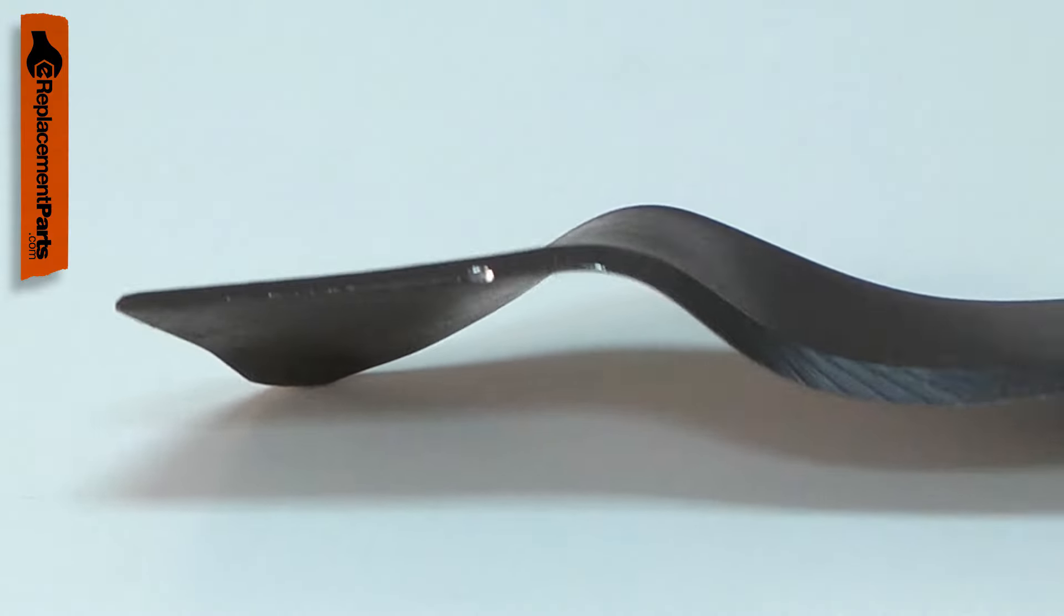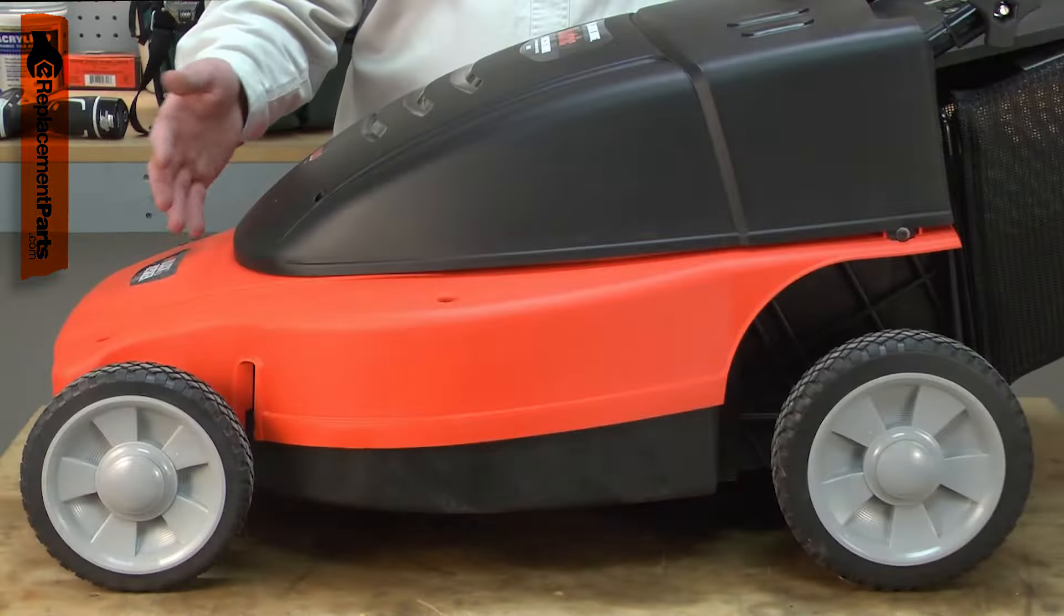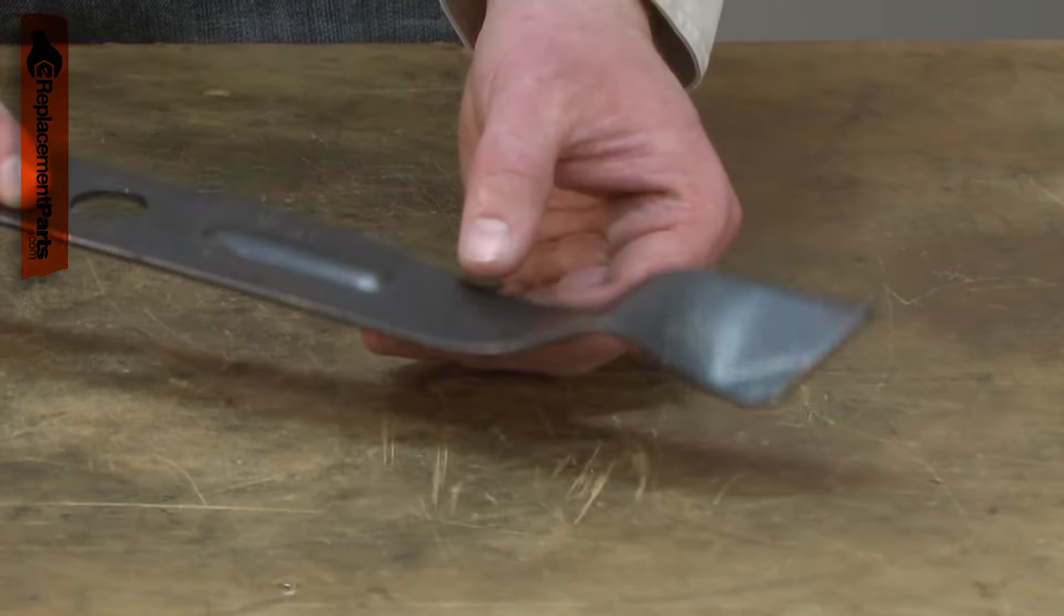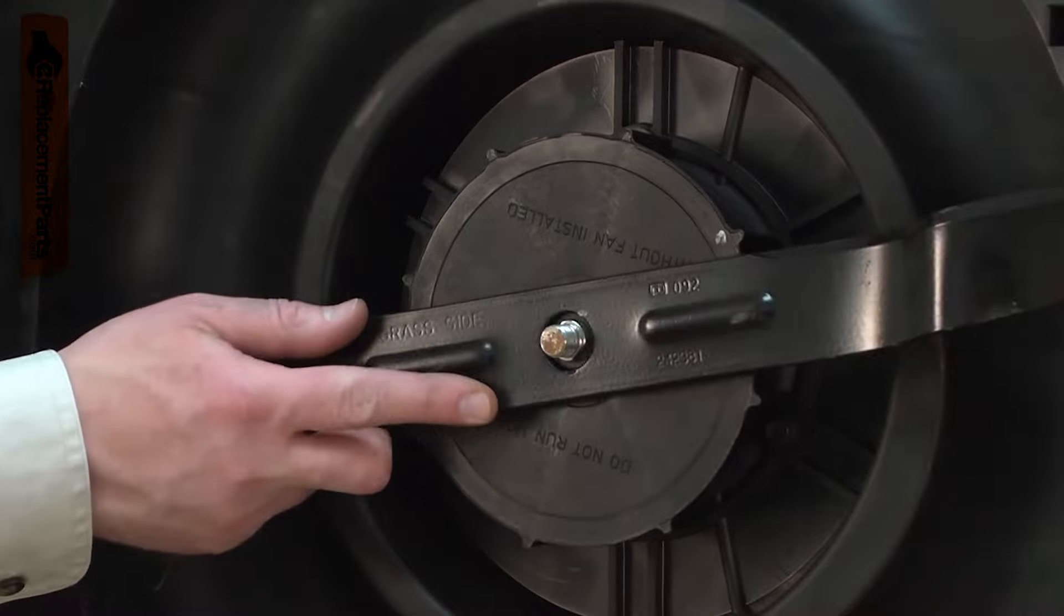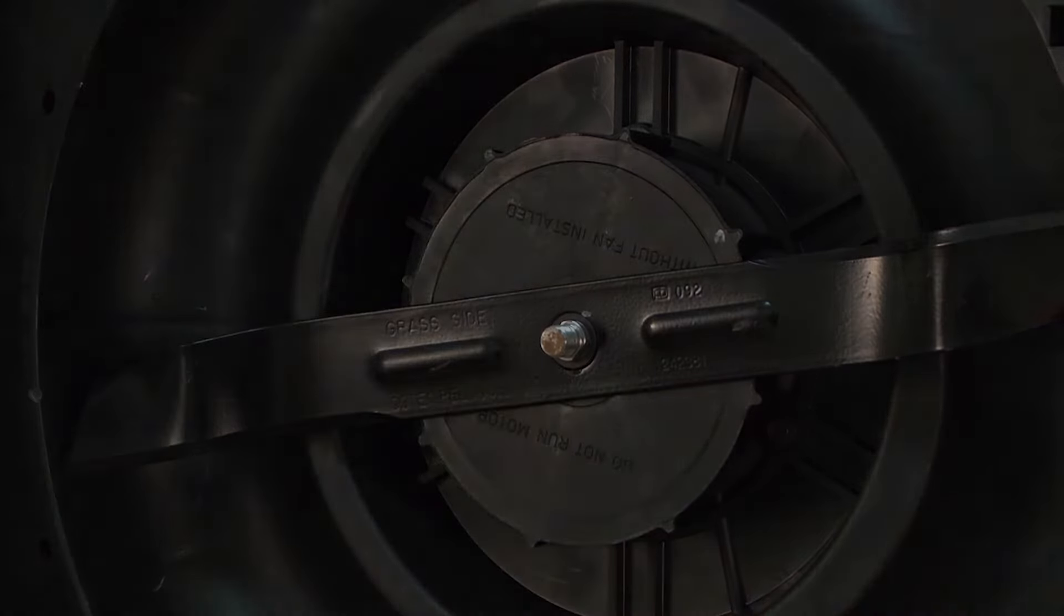When the blade strikes larger debris, it can nick the blade. This will cause the blade to tear and cut poorly. Large nicks can also cause the blade to vibrate during use. Replacing the blade is a repair that you can do yourself and I'm going to show you how.